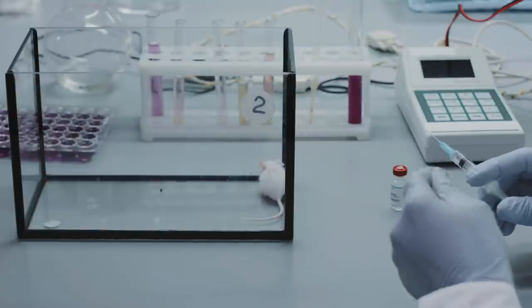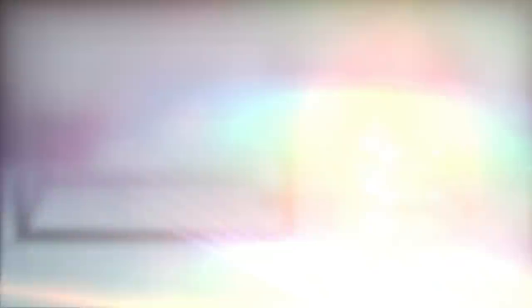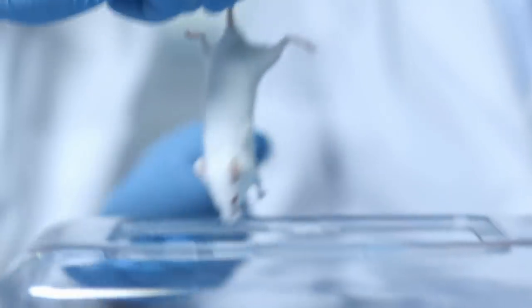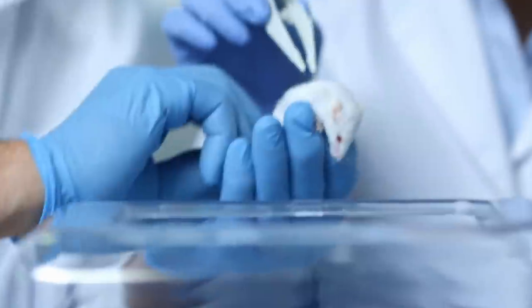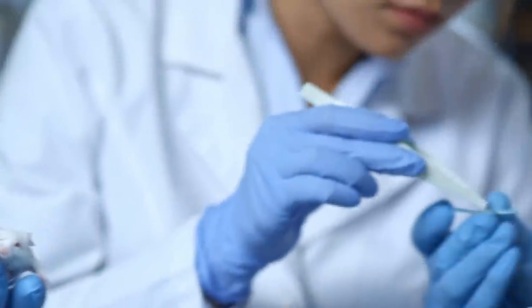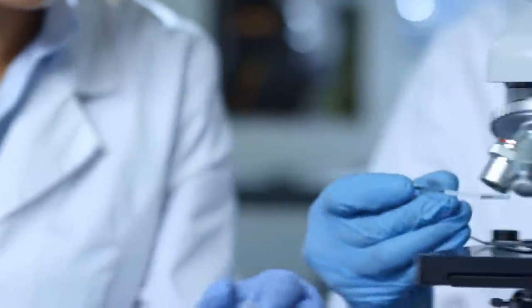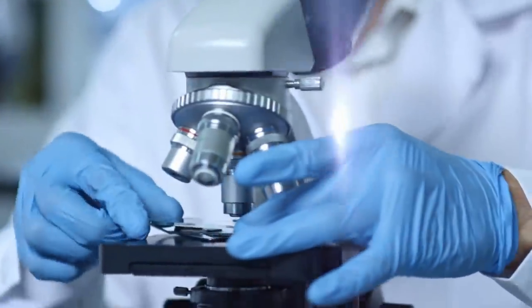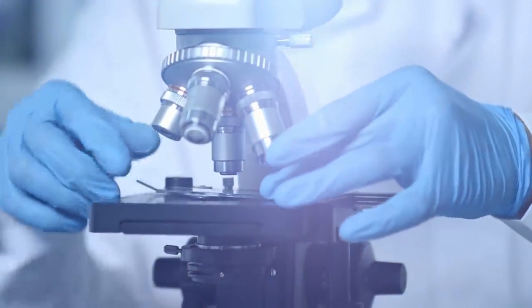In my lab now we can control aging very precisely at will. We can speed it up as fast as we want in an animal and even reverse it. So aging is now controllable. We have the technology to control how fast we age. We can measure that, slow it down, and even reverse it.